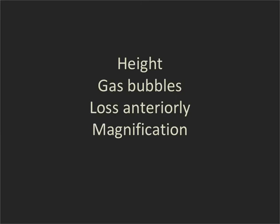So remember, if you want to find which hemidiaphragm is which on the lateral chest X-ray — to lateralize a small pleural effusion or lower lobe pneumonia — check the height of the diaphragms, check for the presence of any big gas bubbles, look for the loss of one hemidiaphragm on the left anteriorly, and if none of those work, look to see which hemithorax is magnified the most and trace it anteriorly from the posterior costophrenic angle. Thanks for listening.